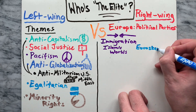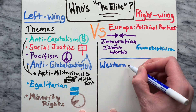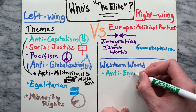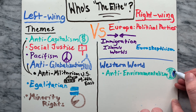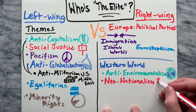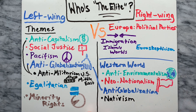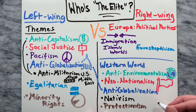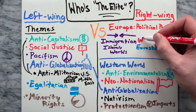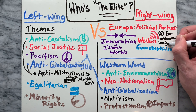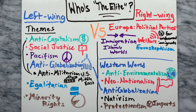Right-wing populism can differ by region. For example, in Europe, the term right-wing populism is used to describe groups, politicians, and political parties that are generally known for their opposition to immigration, especially from the Islamic world, and for Euroscepticism. Right-wing populism in the Western world is generally associated with ideologies such as anti-environmentalism, neo-nationalism, anti-globalization, nativism, and protectionism. Lastly, European right-wing populists also typically support expanding the welfare state by barring undocumented immigrants from receiving government benefits.